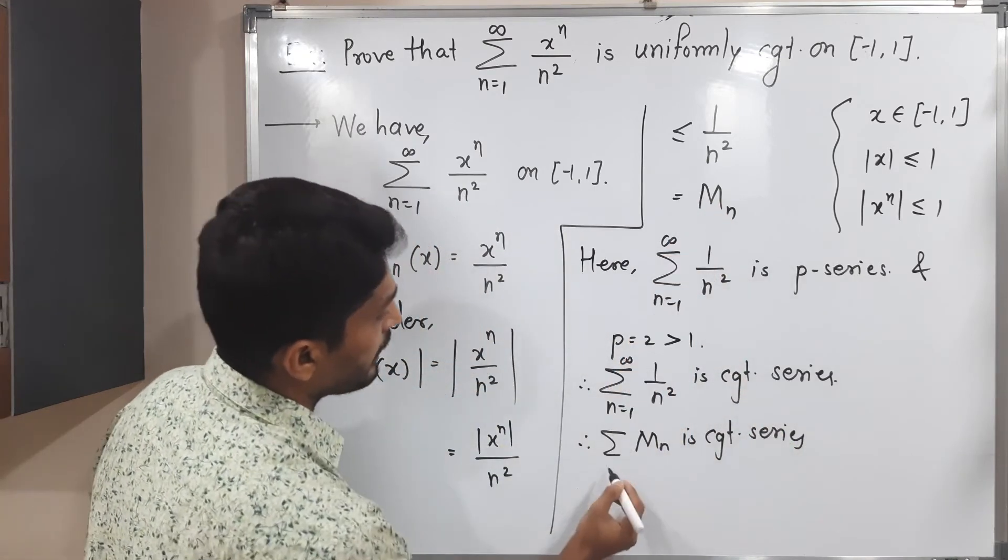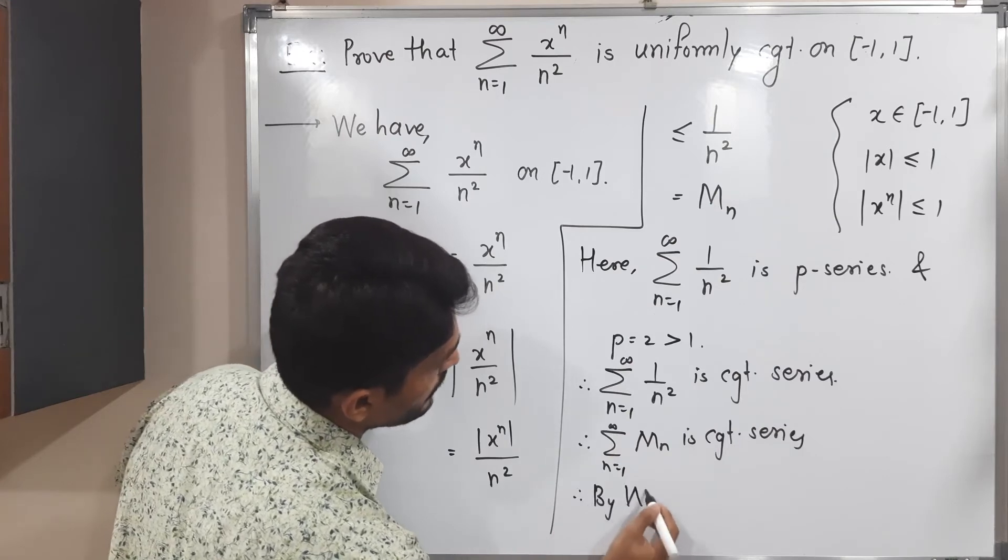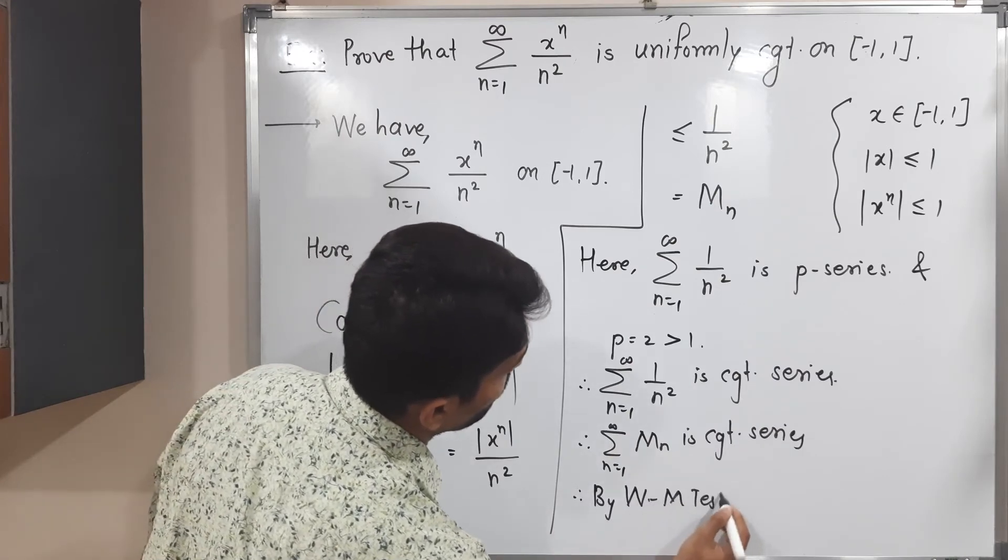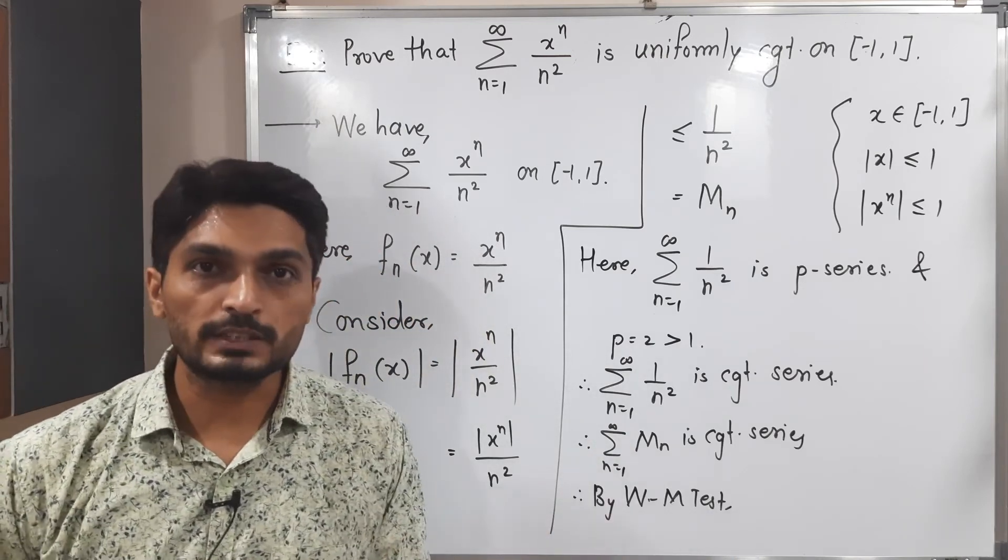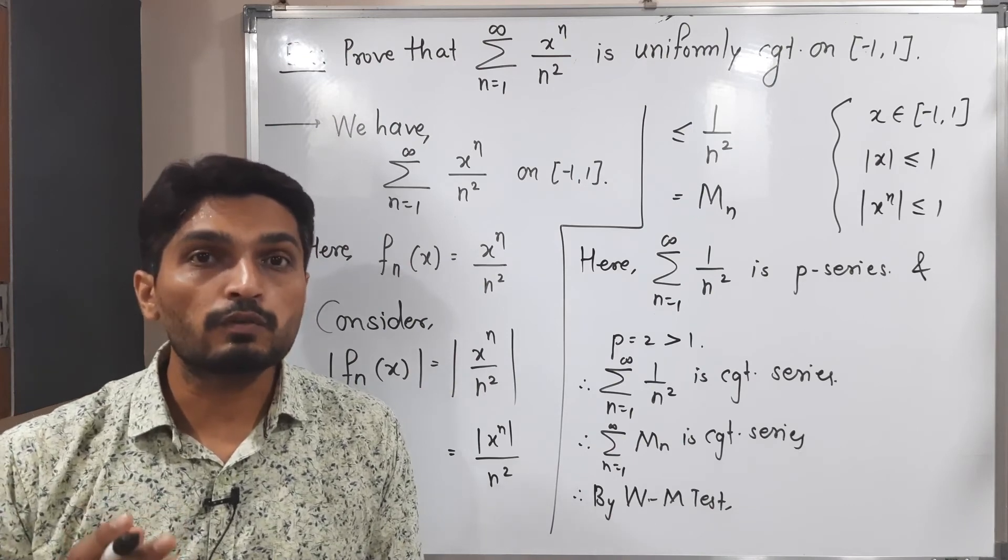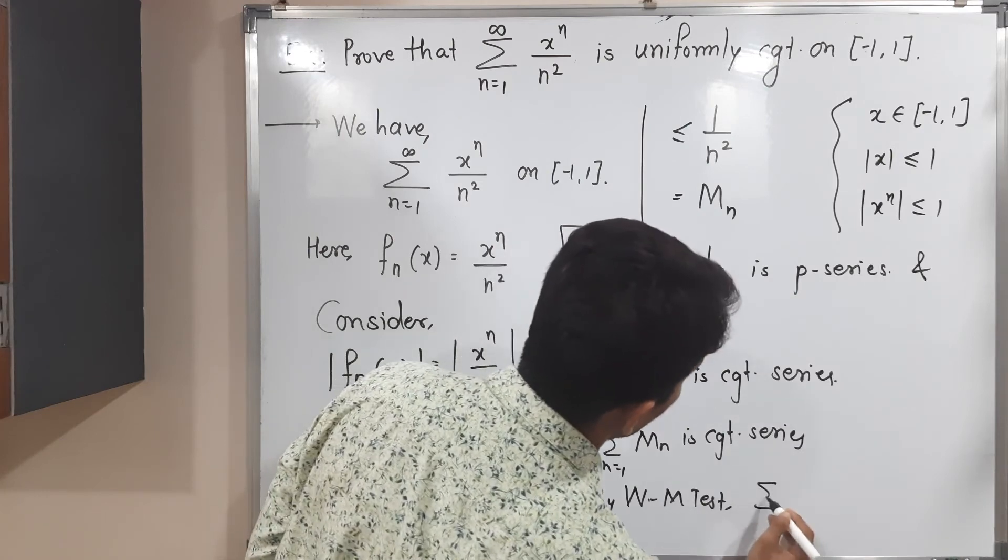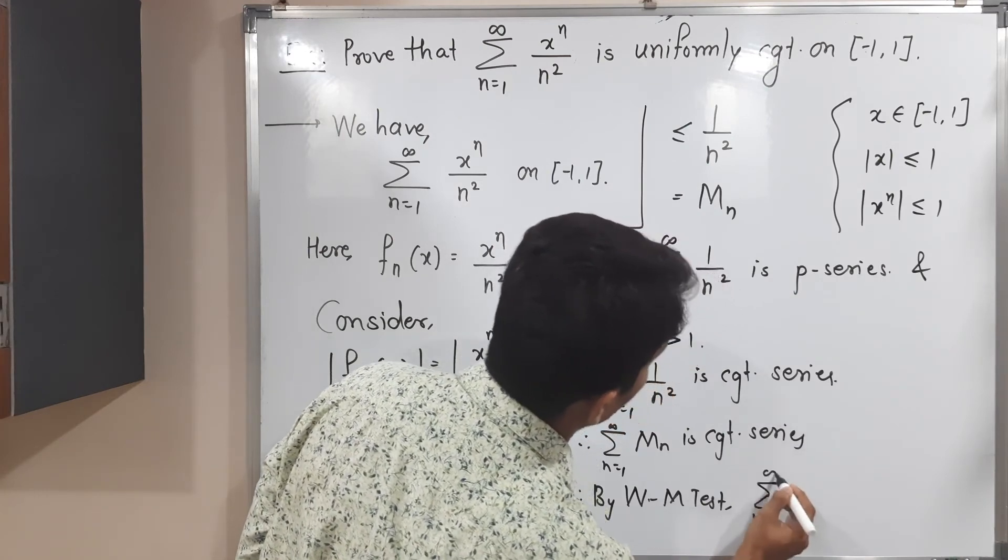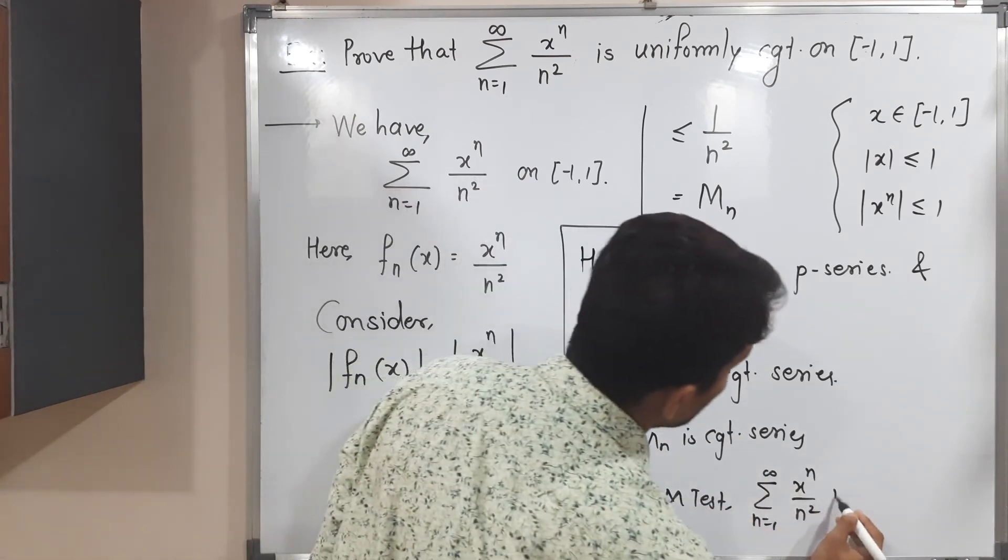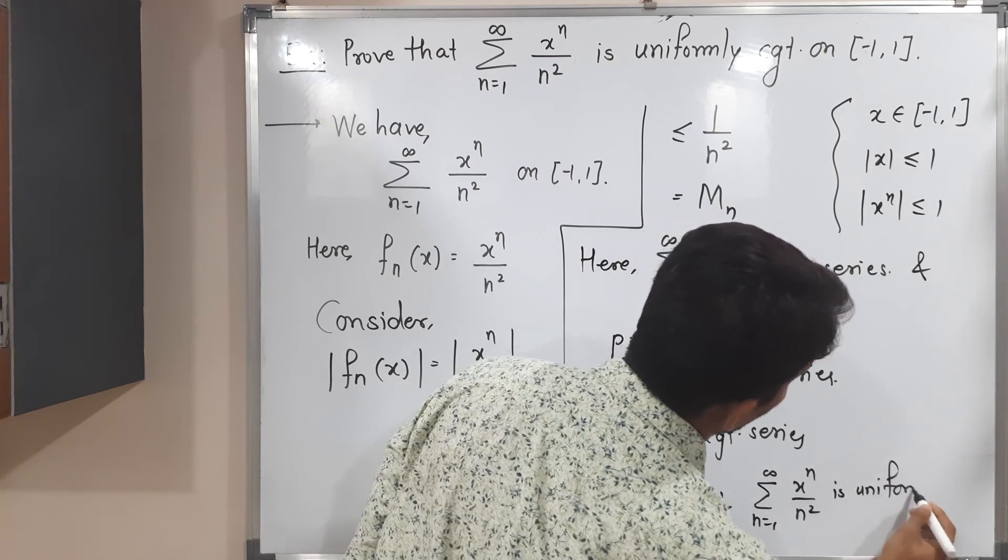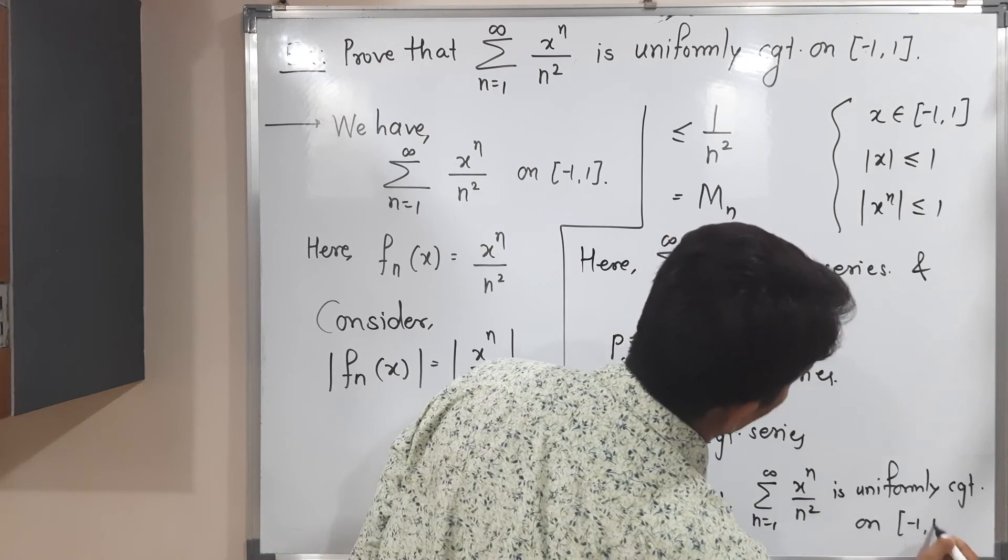Therefore by Weierstrass M-test—Weierstrass M-test says if summation mn is convergent series, the given series of function is also uniformly convergent. So by Weierstrass M-test, summation n running from 1 to infinity x raised to n upon n square, that is the given series, is uniformly convergent.